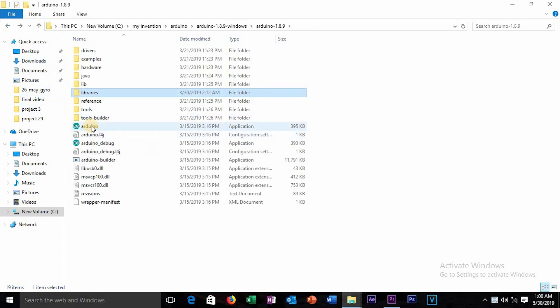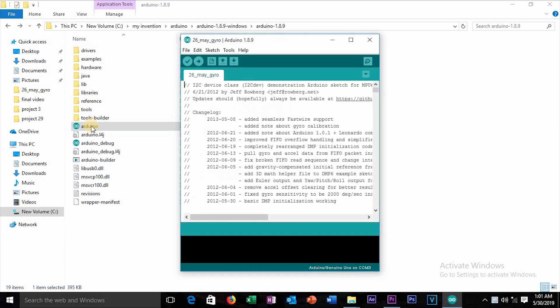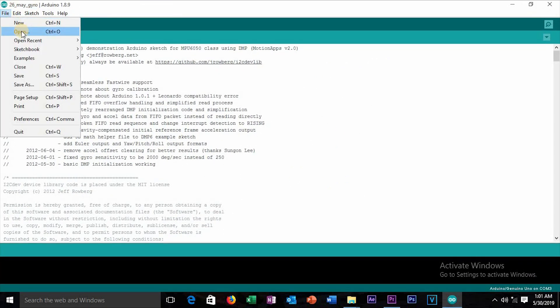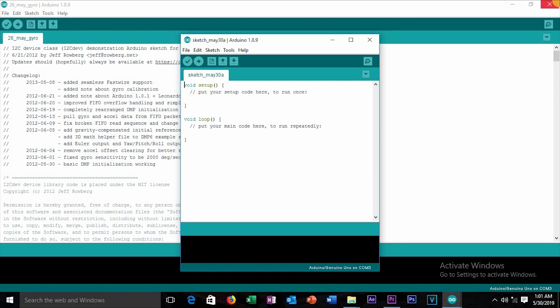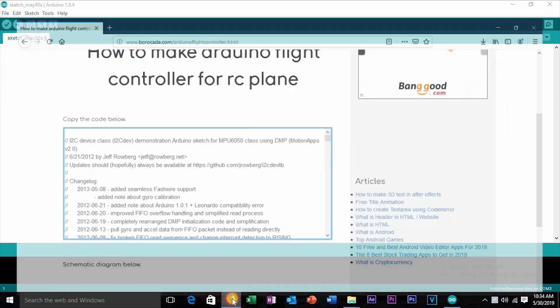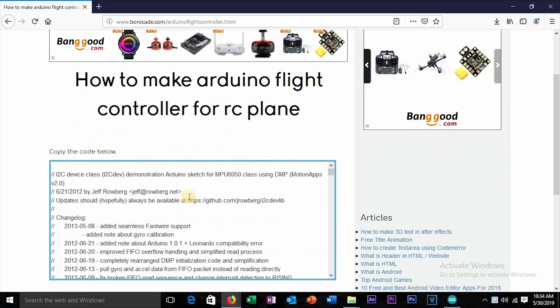Now open Arduino software. Go to new. And copy the flight controller code from the website. Link is given in the description below.